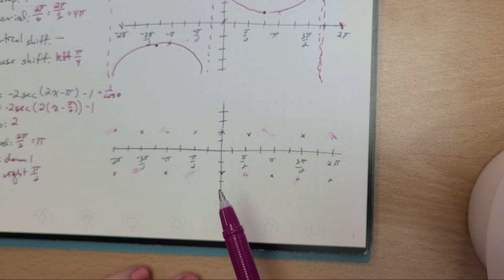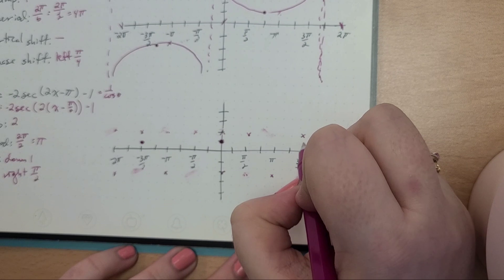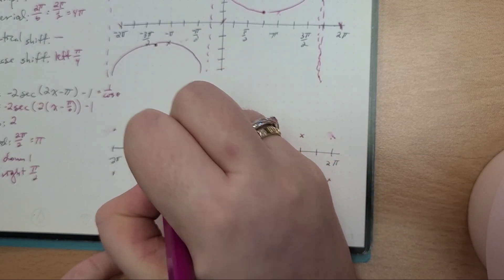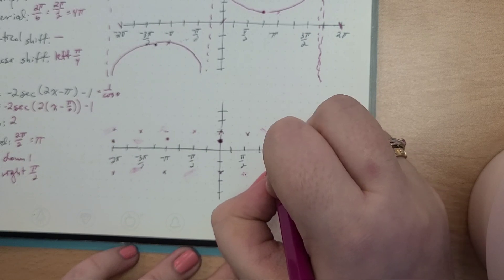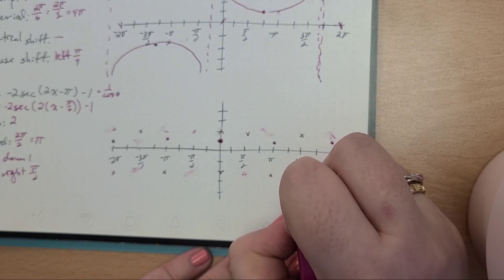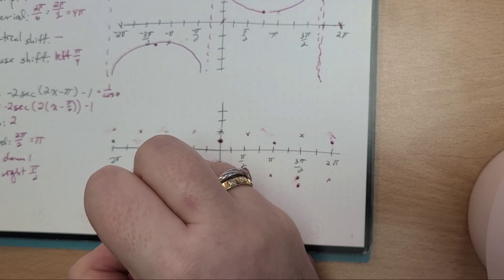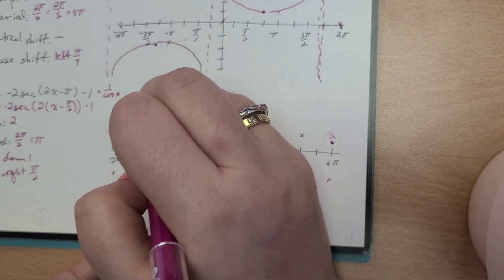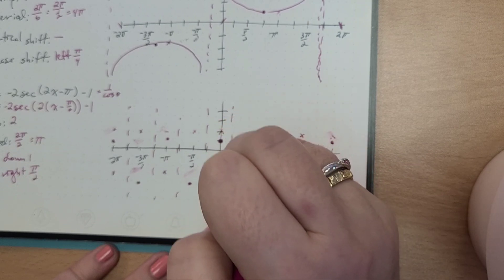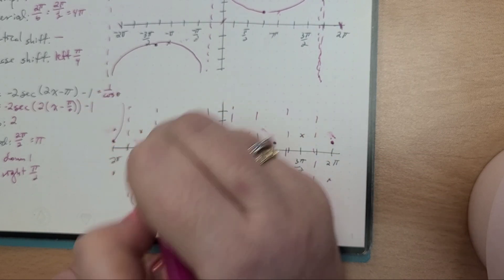The other thing I forgot to do was shift down 1, so let's do that. We're going to shift everything down 1. We've got a point at negative π, negative 2π, π, 2π, and here at 3π/2, down 1, and at pi over 2. So let's draw our asymptotes here — we've got one between. This is such a mess, but hopefully you would erase better than me and you would get kind of the idea.